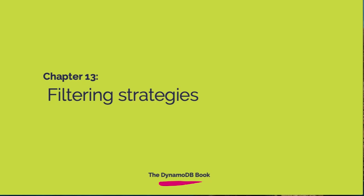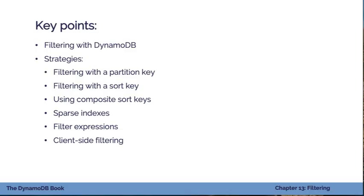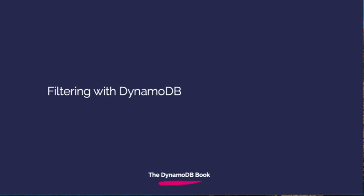Welcome to chapter 13. This is on filtering strategies and we're going to cover the following key points. First, we're going to talk about filtering generally with DynamoDB and how it's different than a relational database. Then we're going to walk through six strategies for filtering: filtering with a partition key, filtering with a sort key, using composite sort keys, using sparse indexes, and some other interesting patterns like using filter expressions or client-side filtering.